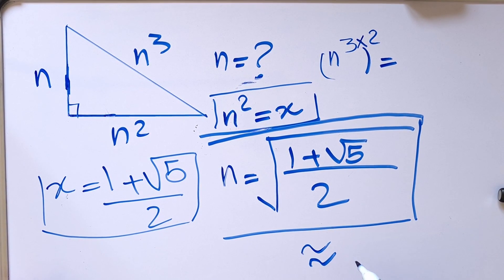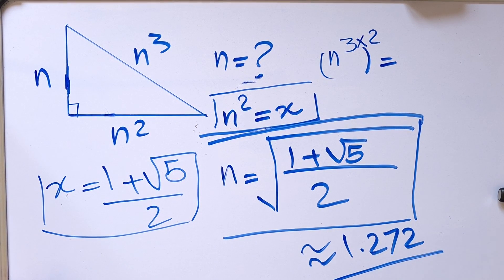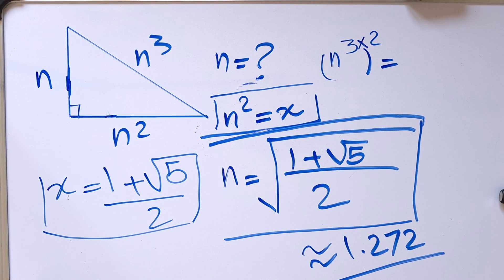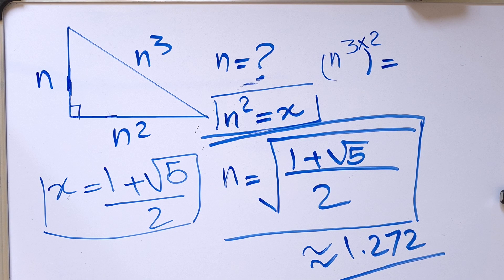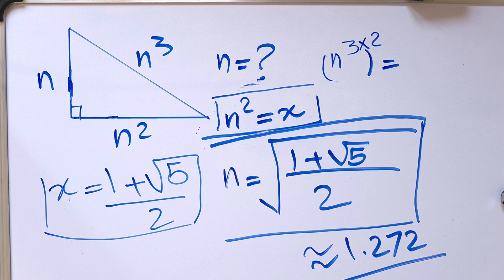So the final answer is n equals the square root of 1 plus root 5 over 2, which is approximately 1.272. That's going to wrap it up for today. I hope you enjoyed this video — drop your thoughts in the comments below, don't forget to subscribe, and see you on our next video on Prime Logic.